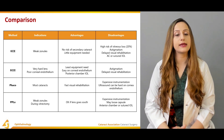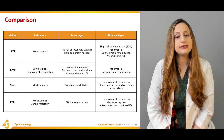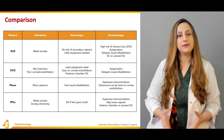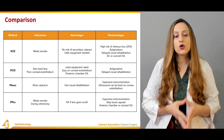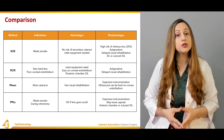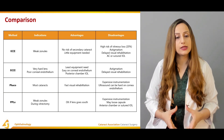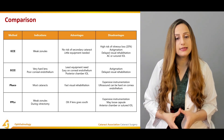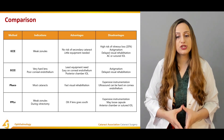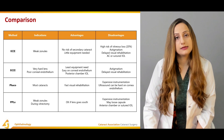Extracapsular cataract extraction is indicated for very hard lenses or poor corneal endothelium. Advantages include least equipment needed and being easy on corneal endothelium with a posterior chamber intraocular lens. Disadvantages are astigmatism and delayed visual rehabilitation. For phacoemulsification, most cataracts are the indication; advantages include fast visual rehabilitation, while disadvantages are expensive instrumentation and ultrasound being hard on corneal endothelium. Laser techniques are used during vitrectomy when the lens is displaced, though there may be loss of capsule or need for sutured intraocular lenses.